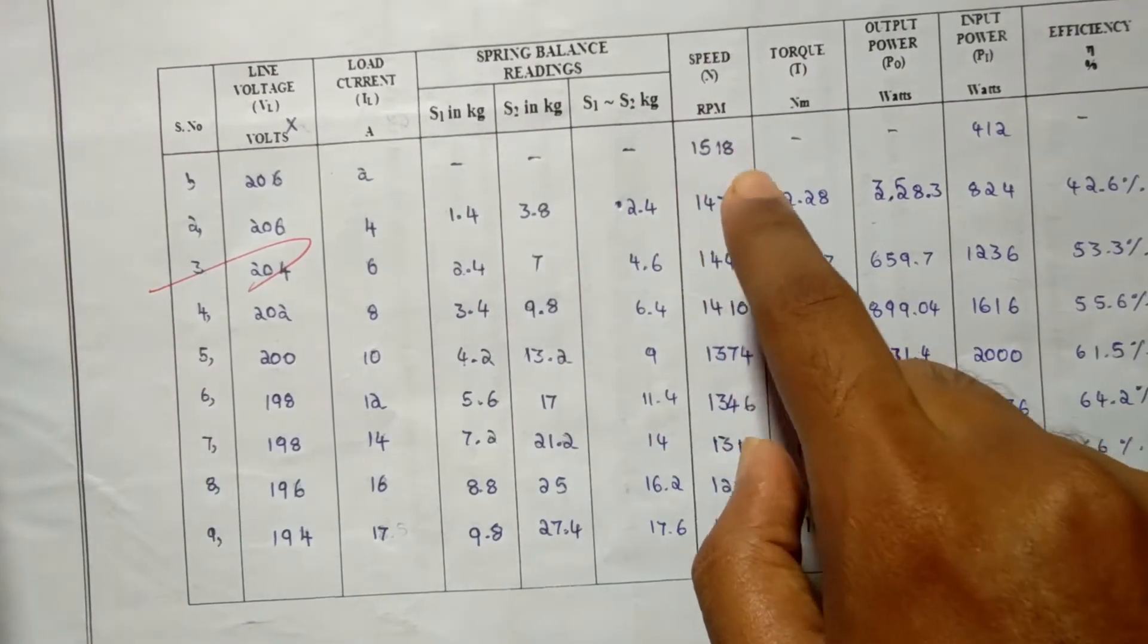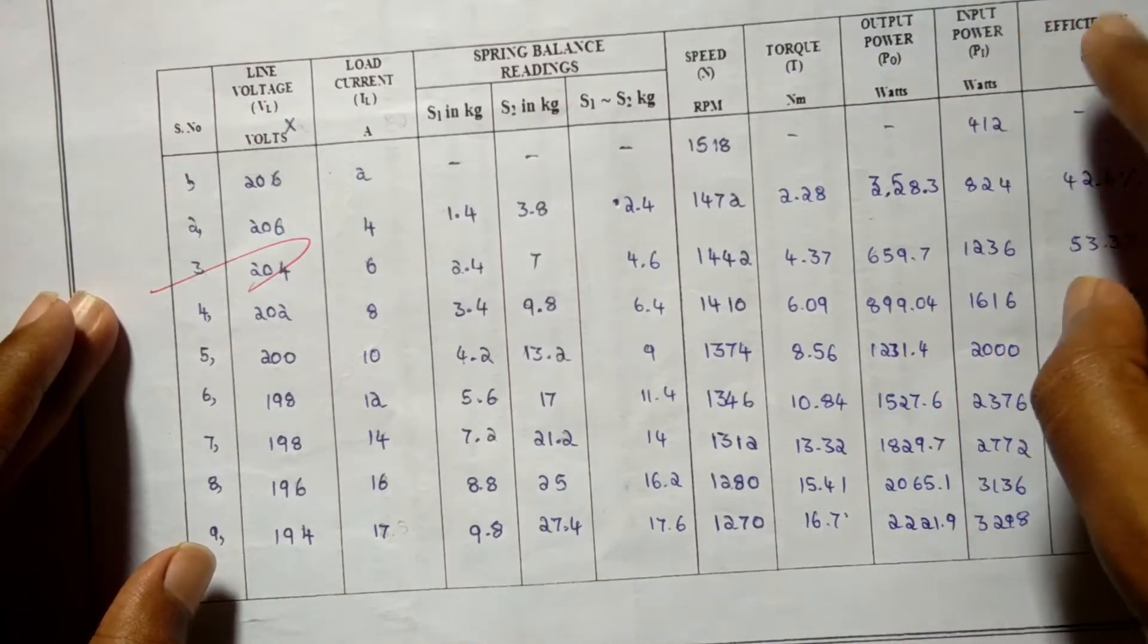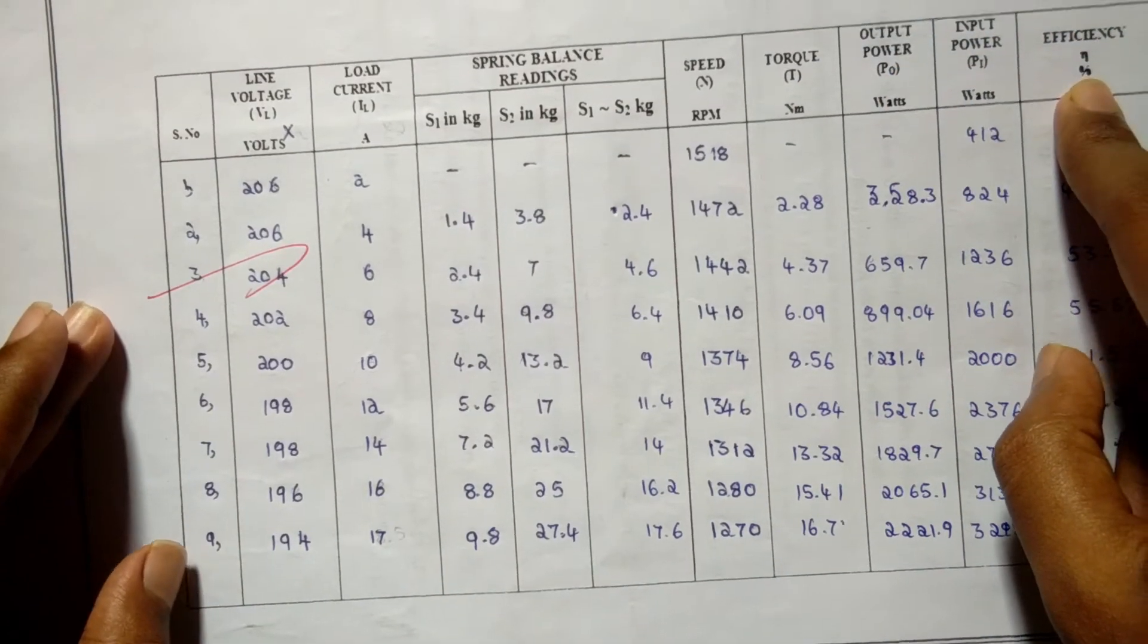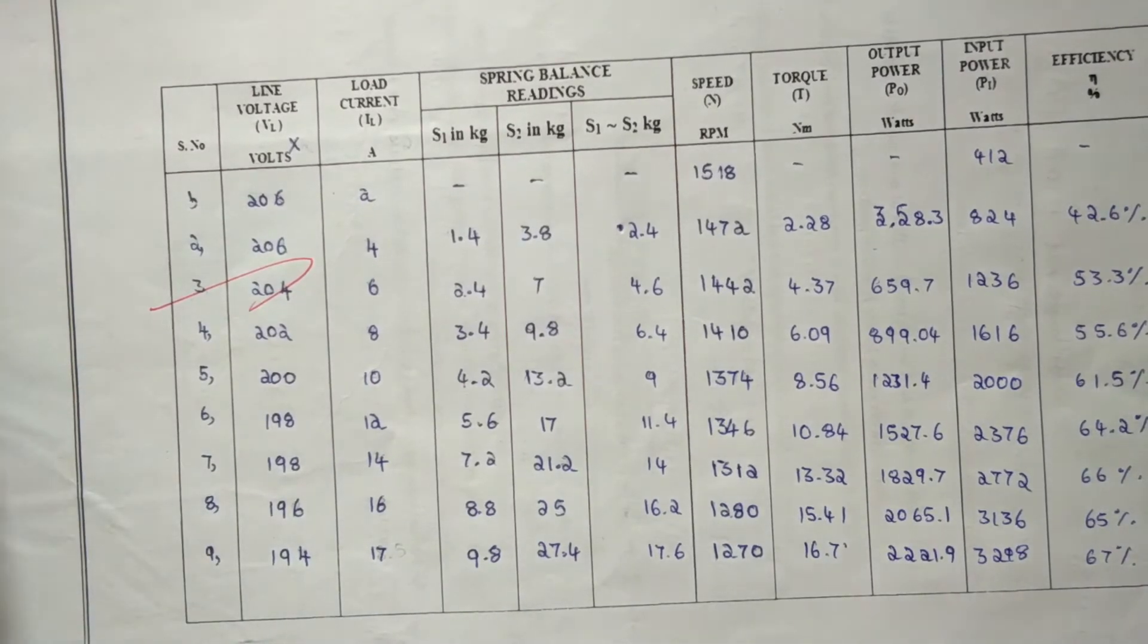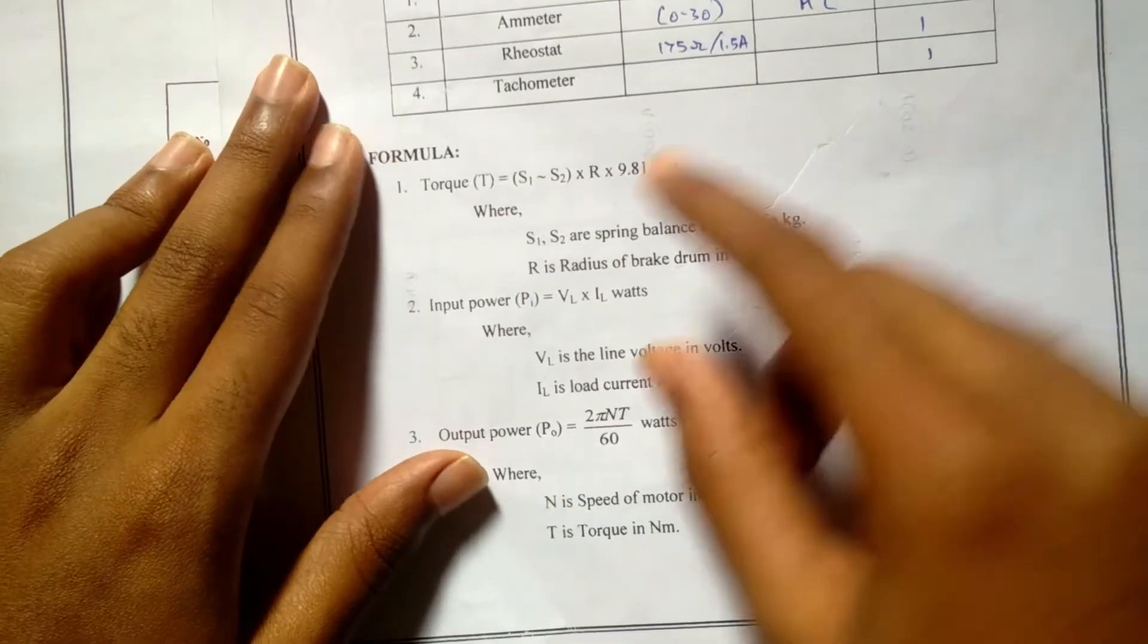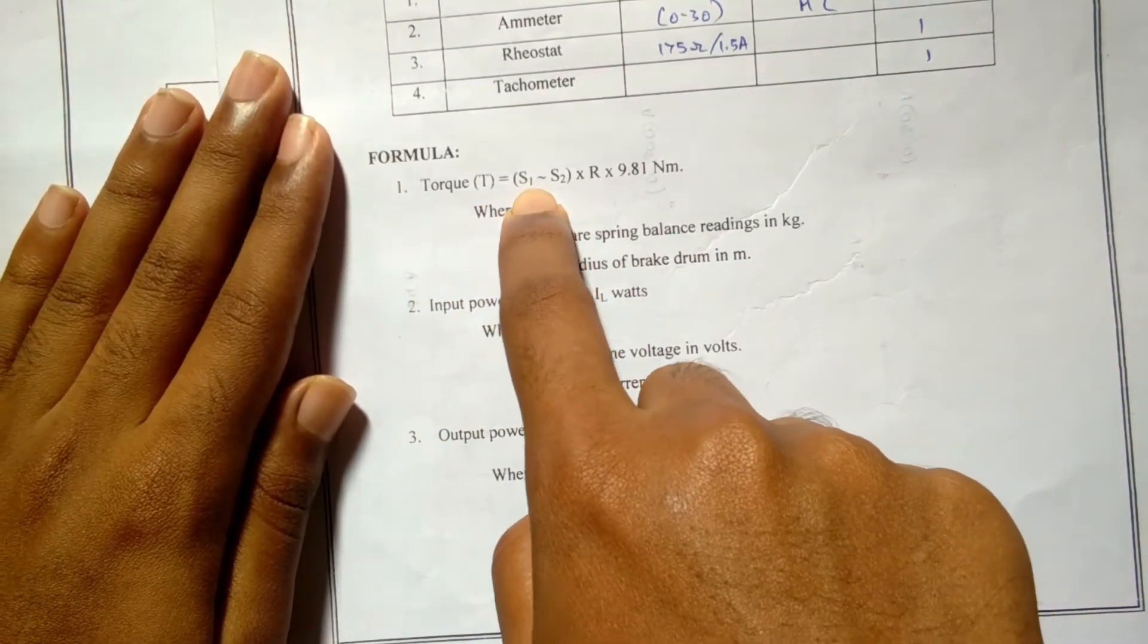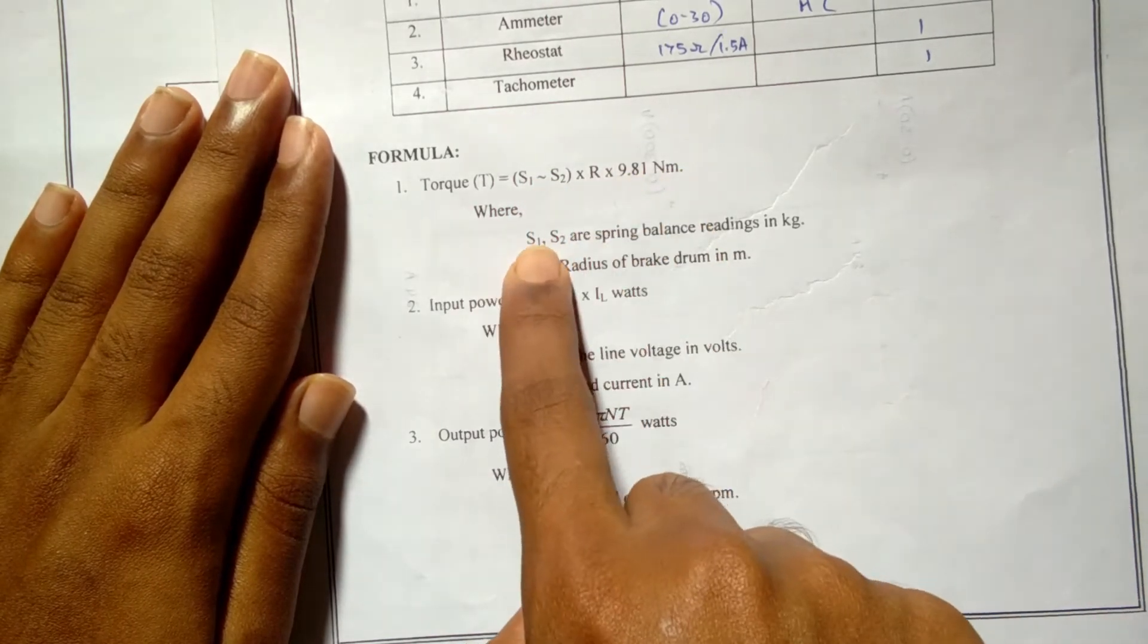The speed is noted down using the tachometer. The torque, output power, input power, and efficiency are found using the formulas. The formula for torque is T = (S1 - S2) × R × 9.81 Nm, where S1, S2 are the spring balance readings in kg and R is the radius of the brake drum in m.